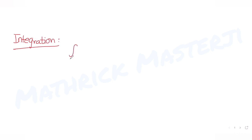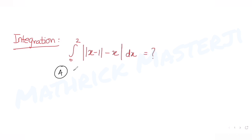Hi guys, I hope you are all doing well. Let's see today's question. So today's question, we are taking this up from the topic of integrals. The question tells us that the integral from 0 to 2 of mod of (x minus 1) minus x dx is equal to — we have been asked the value to find out. The answer choices are 1, 1.5, 3, and 4.